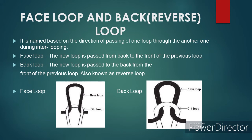If the new loop passes to the back from the front of the previous loop during inter-looping, the loop is called a back loop. This is also called a reverse loop. Whether the face loop or back loop, due to inter-looping or inter-meshing, each loop has four inter-meshing points: two at the head with the loop at the top, and two at the base with the loop at the bottom.